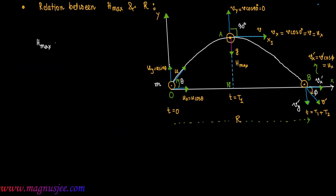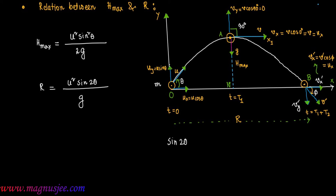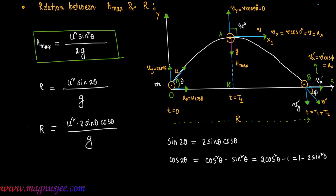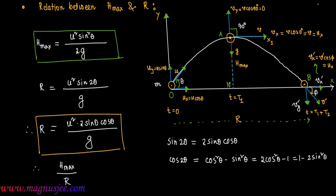The expression for maximum height is H max = U² sin²θ / 2g. The horizontal range R is equal to U² sin2θ / g. Now, sin2θ = 2 sinθ cosθ, so R = U² · 2 sinθ cosθ / g.